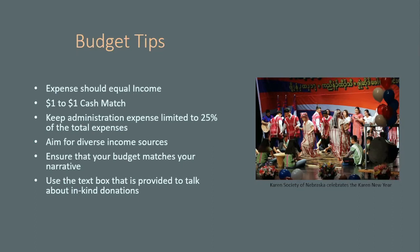Keep your administration expense limited to 25% of total expenses — take a look at that before you submit, because depending on the amount of administration expense, we might have to have you revise your budget. Reviewers really like to see diverse income sources; they want to see community support evident through individual donations, expected admission, and grants from local family foundations. All of that is really helpful for reviewers to see.